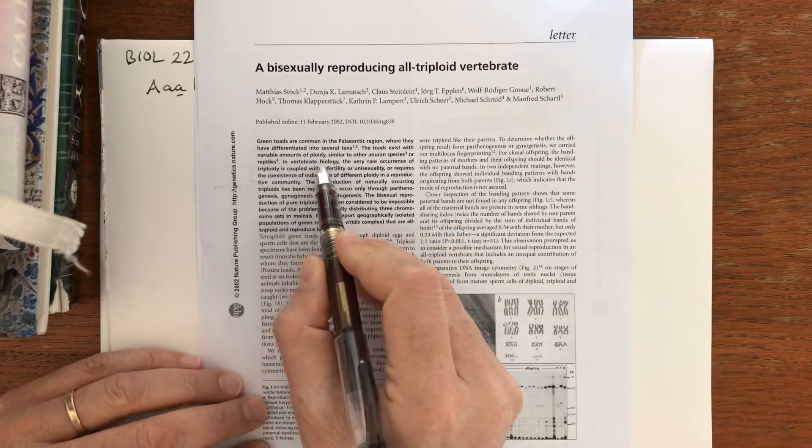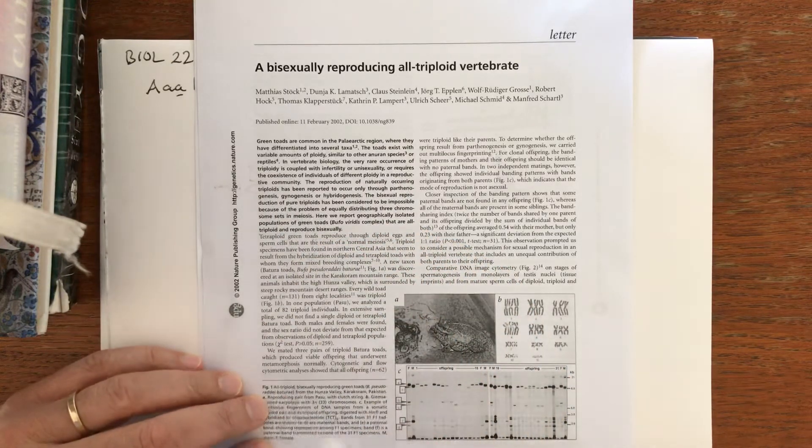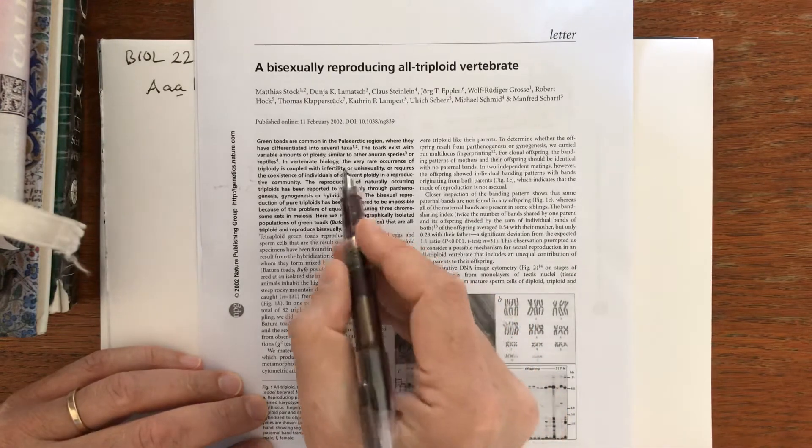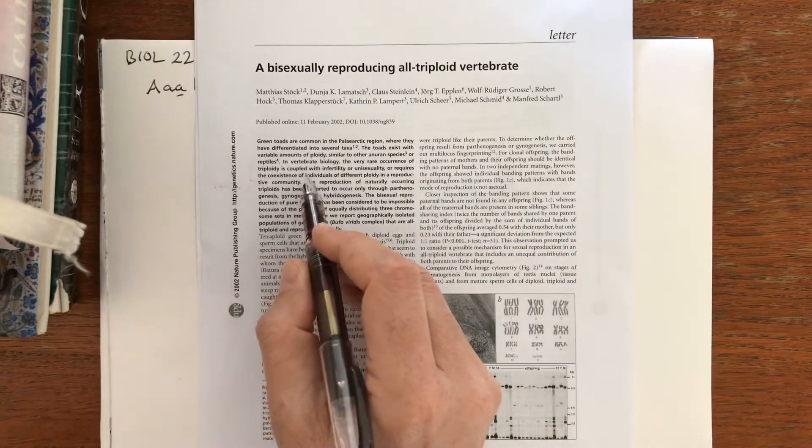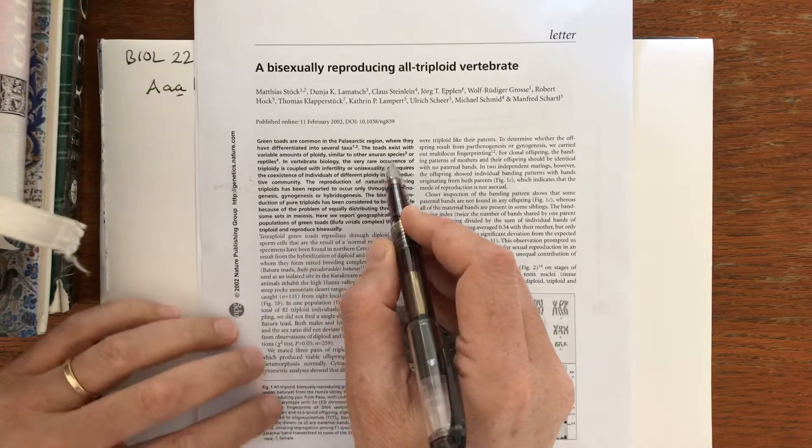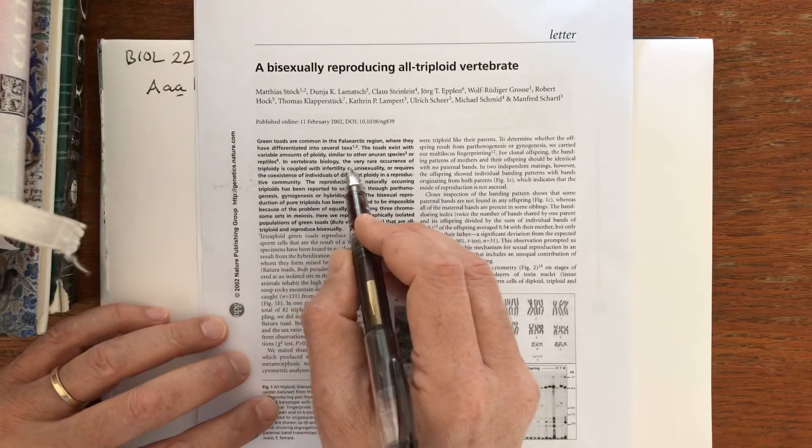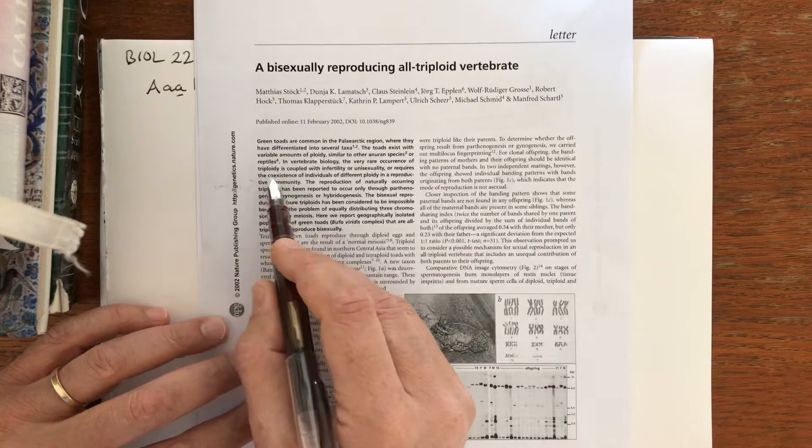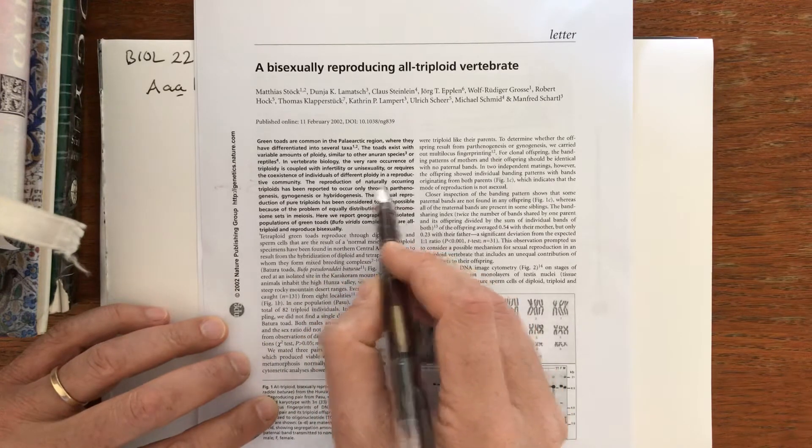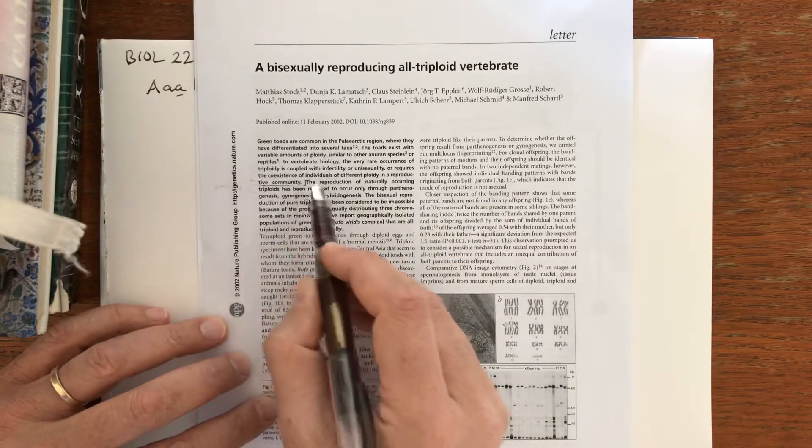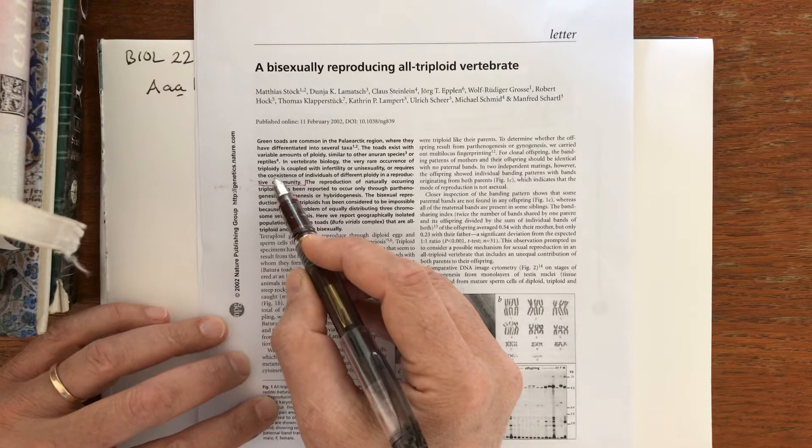The toads exist with varying amounts of ploidy - similar to other anuran species and reptiles - so ploidy, that is haploid, diploid, tetraploid and so on. In vertebrate biology, the very rare occurrence of triploidy is coupled with infertility or unisexuality, or requires the coexistence of individuals of different ploidy in a reproductive community. There have been triploids seen before, but they tend to be infertile or non-sexually reproducing.